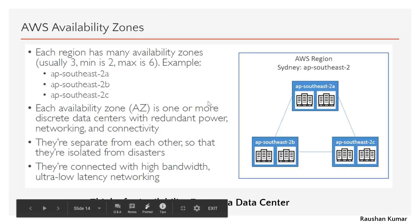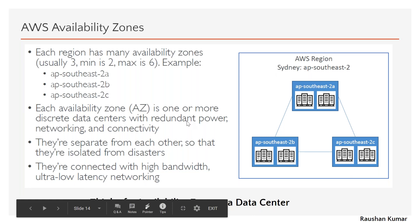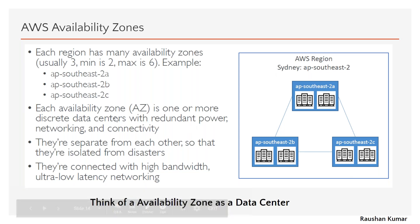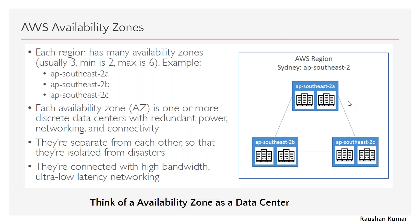When I say AZ, you should understand I'm talking about a data center. When I say region, imagine multiple data centers — minimum two, maximum six. So an AWS region means more than two data centers, each called an Availability Zone. In this example, the Sydney region has three AZs. Each AZ is one or more discrete data centers — roughly think of an AZ as one data center.